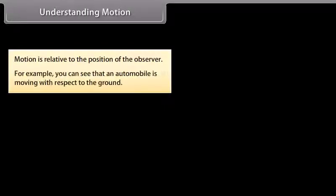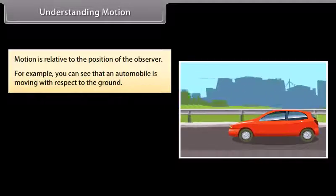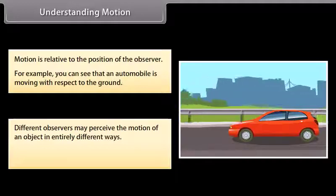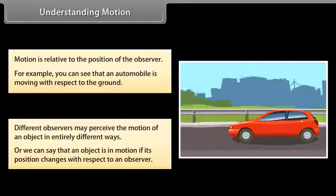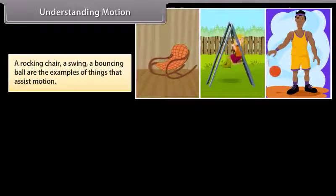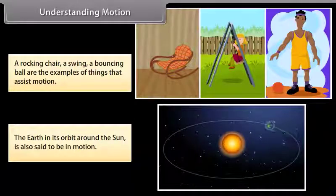Motion is relative to the position of the observer. For example, you can see that an automobile is moving with respect to the ground. Different observers may perceive the motion of an object in entirely different ways. An object is in motion if its position changes with respect to an observer. A rocking chair, a swing, and a bouncing ball are examples of things that exhibit motion. The earth in its orbit around the sun is also said to be in motion.